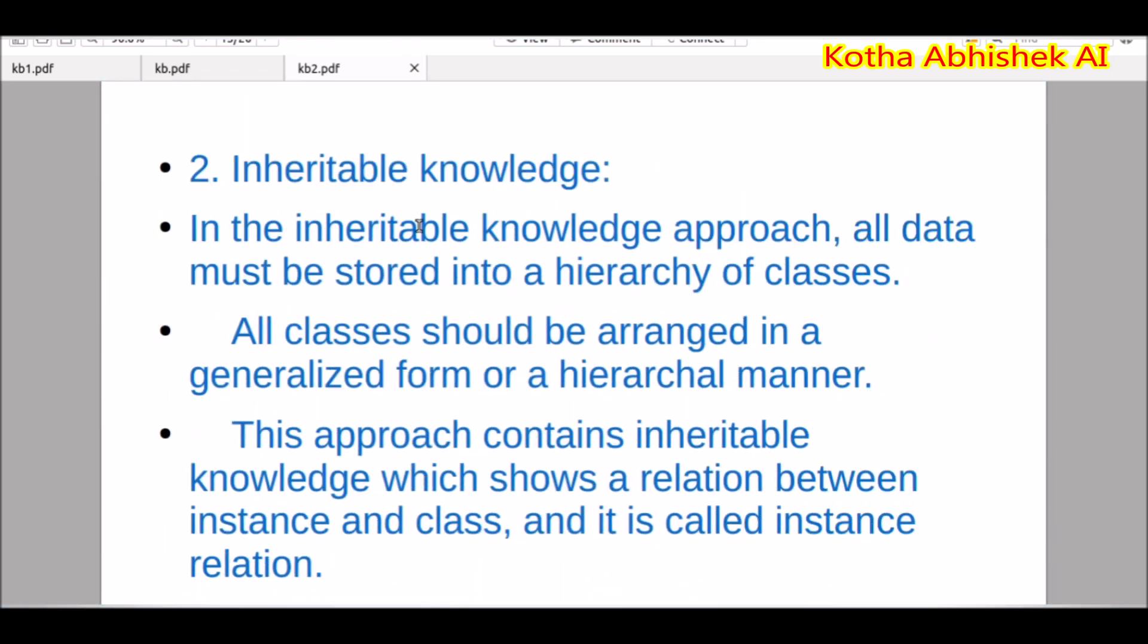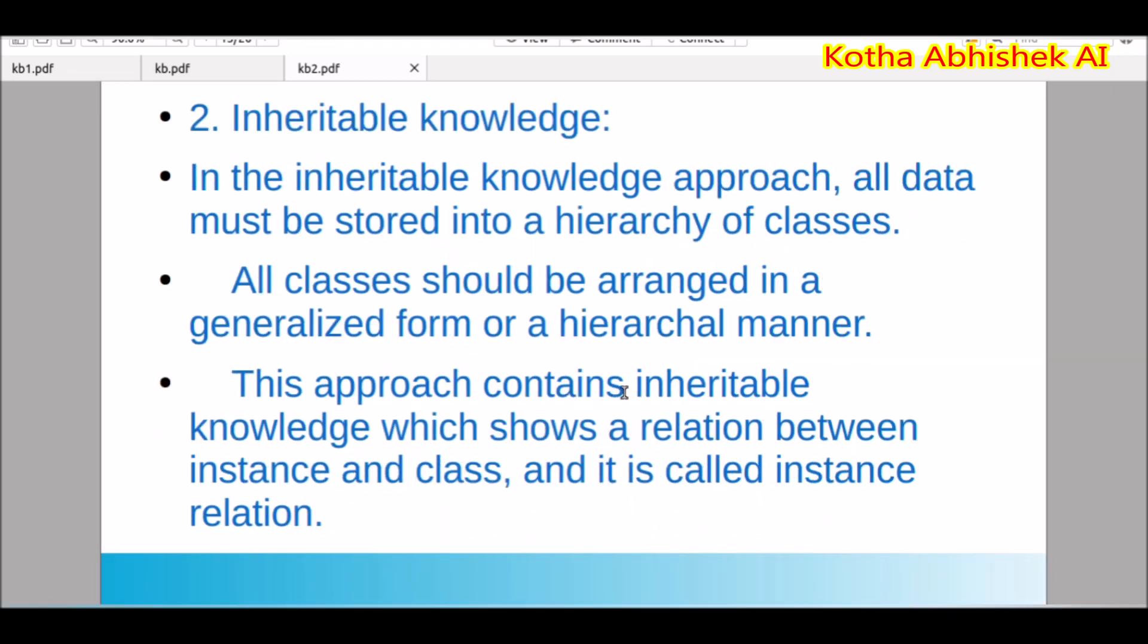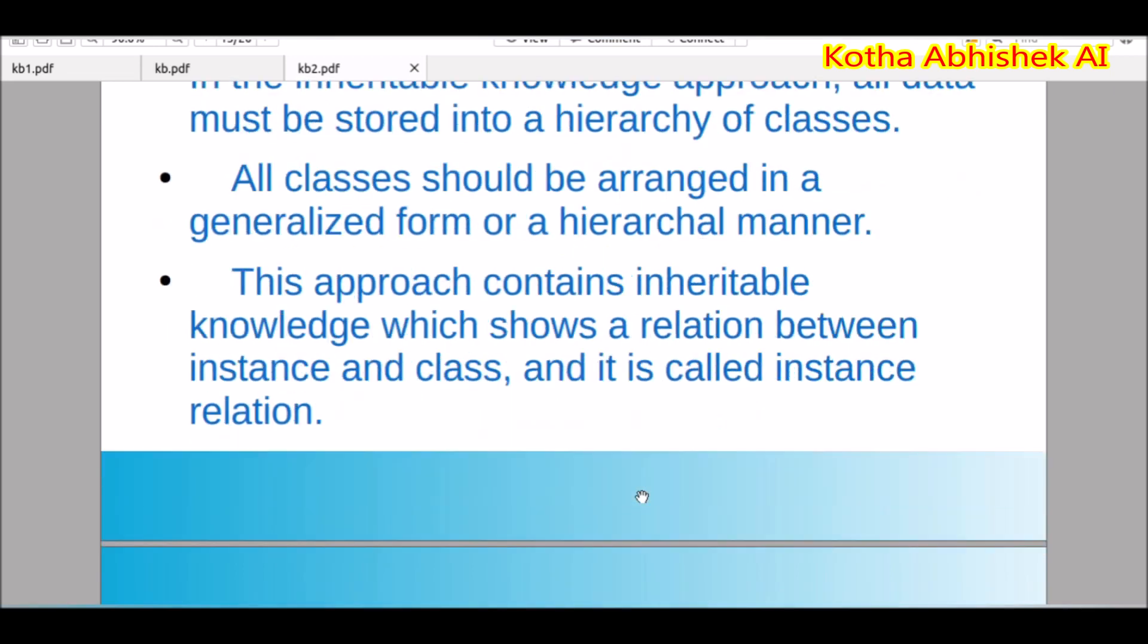Next method, that is inheritable knowledge. Inheritance means it is from the history, from the parent to child. You already know from Java, classes and children. It is nothing but a hierarchy. Whatever the parent having properties, they will come for the child also. This approach contains inheritable knowledge which shows a relation between instance and class. It is called instance relation.